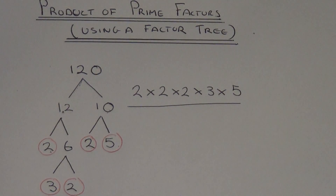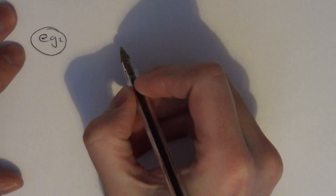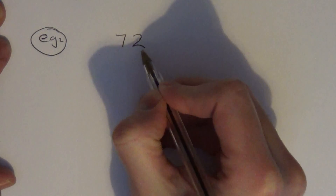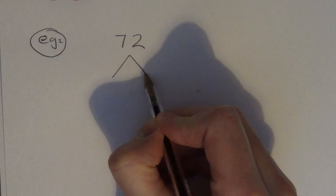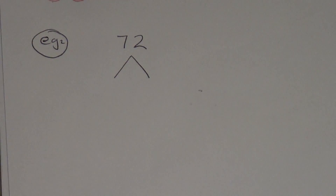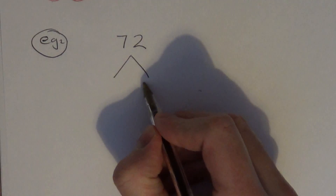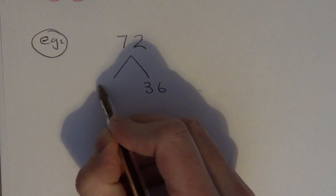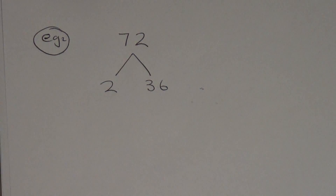Let's do another example. So let's write down 72 as the product of prime factors. This time we haven't got a zero at the end, so let's go with the 2 times table. Half of 72 is 36, so 2 times 36 is 72.